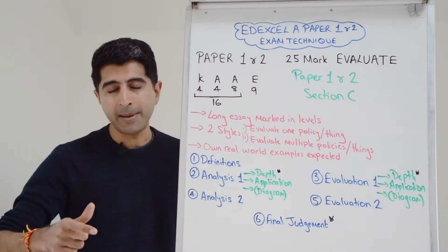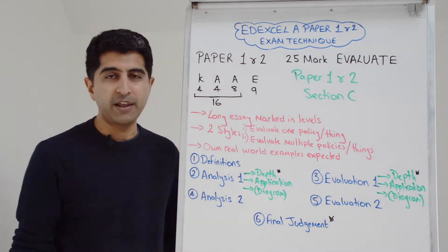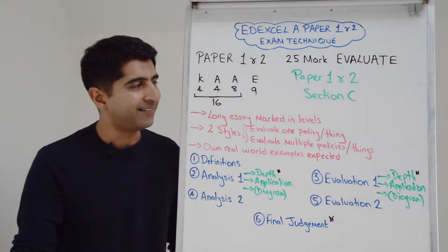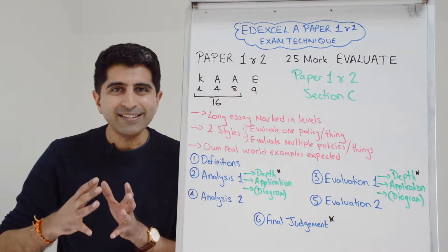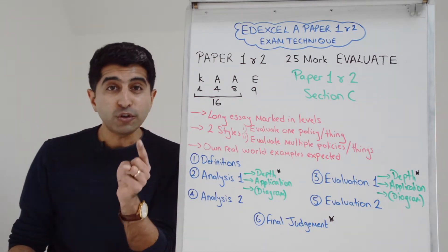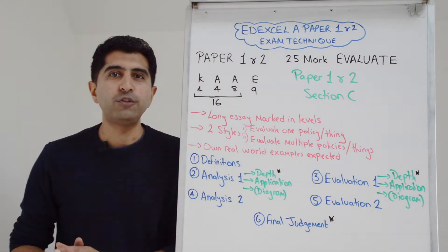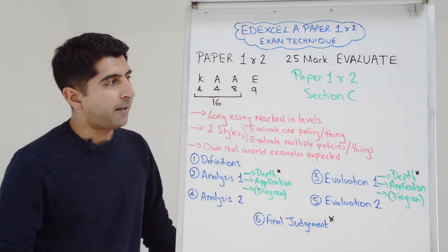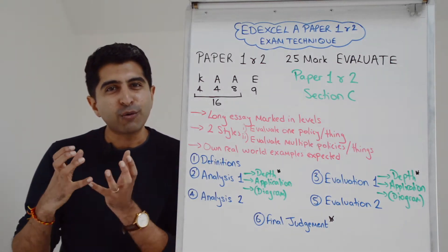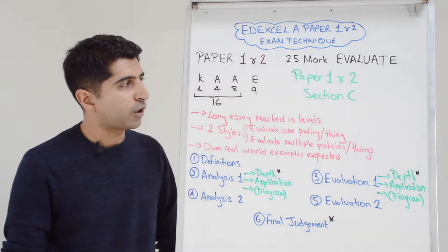We're focusing on the 25 marker in paper one and paper two only. This will come in section C, meaning your extracts are finished. The extracts don't apply to a 25 mark. Your own real world examples are very much expected instead. Note that in section C there'll be two 25 markers. You just need to pick one of those two. Pick the one that suits you best, the one you feel you can write in the most detail.